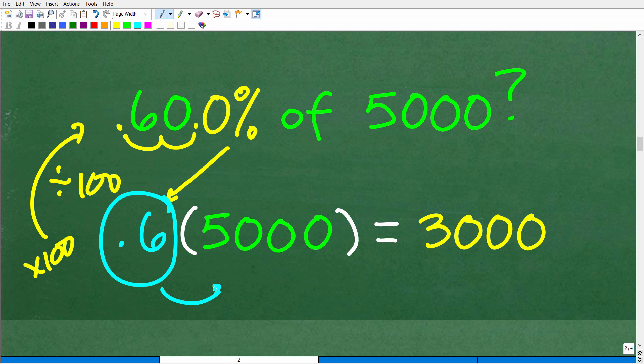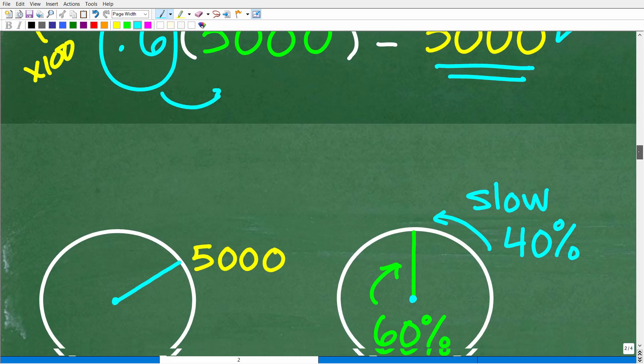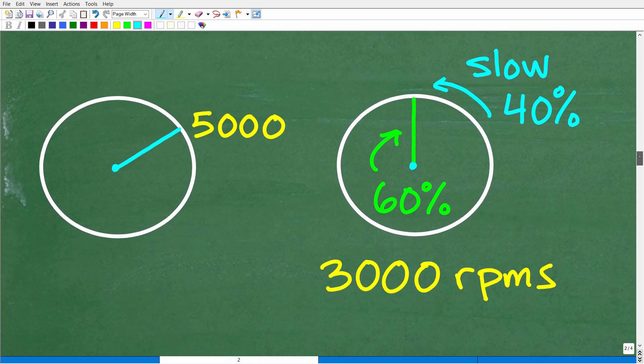So, 0.6 times 5,000 is 3,000. 0.6 times 5,000, 3,000. Pretty simple math. Again, feel free to use a calculator. So, what did we just do? Well, let's go back to kind of visualizing our problem. So, here, our engine was at 5,000 RPMs. We slow down 40% or maintain 60% of the speed, 60% of 5,000, which is 3,000 RPMs. Okay. So, now the engine is turning 3,000 revolutions per minute.